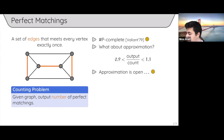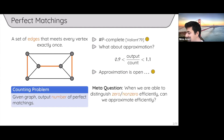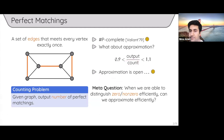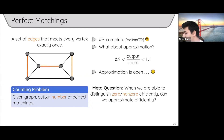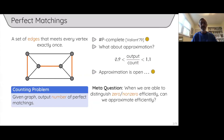Unfortunately, for this problem, getting an efficient approximation algorithm is still open. This is one of the open cases of a meta-question in the literature on counting and sampling: if you want any multiplicative factor approximation, you need to distinguish whether the count is zero. The meta-question is: for problems where we can find a solution — problems in P — when can we design approximate counters?